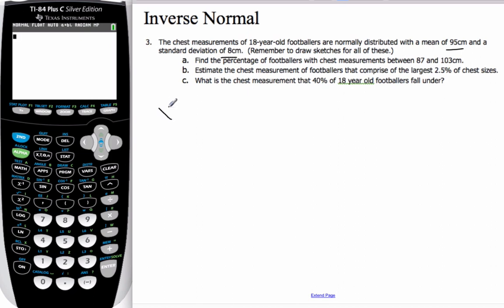So I'm going to introduce my random variable X as the normal distribution with a mean of 95 and the standard deviation squared variance of 8. I want to find the percentage of footballers with chest measurements between 87 and 103. So that means I'm looking for the probability that it's between 87 and 103.